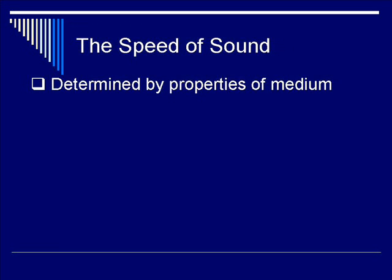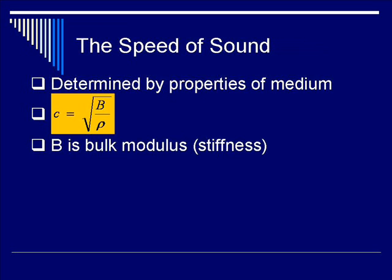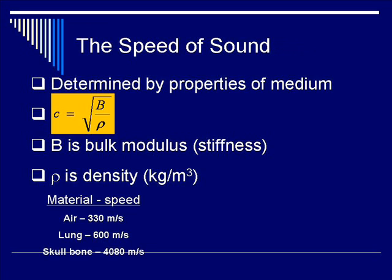The speed of sound is a very important component for understanding ultrasound in terms of the pulse echo reflection and propagation. It is determined by the properties of the medium. The equation C, standing for speed of sound, is the square root of B — the bulk modulus — over rho, the density of the medium. The bulk modulus denotes the stiffness of the material, which oftentimes is the determining factor for the speed of sound. Rho, the density, is typically close to 1 kg per cubic meter for most substances.